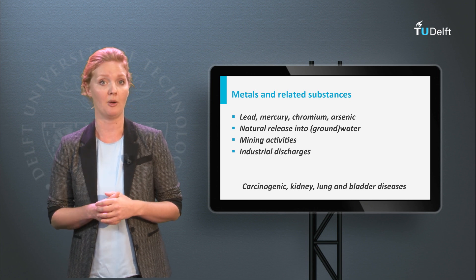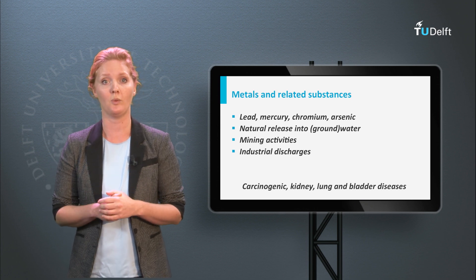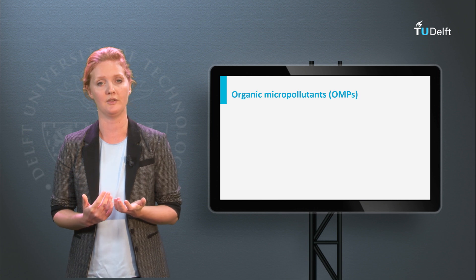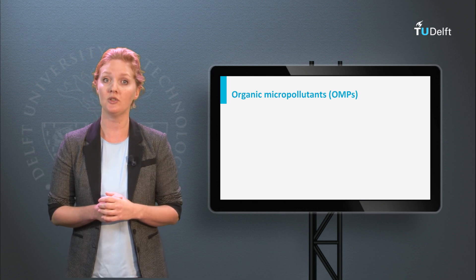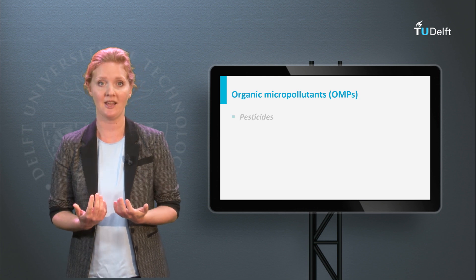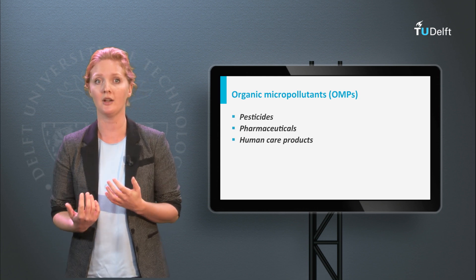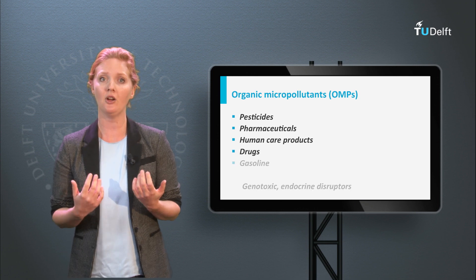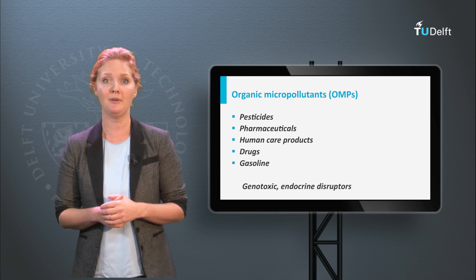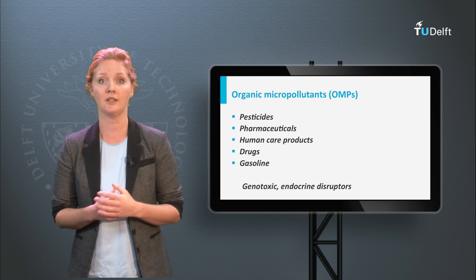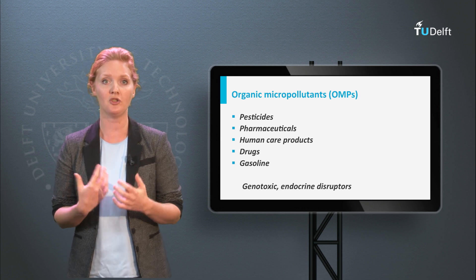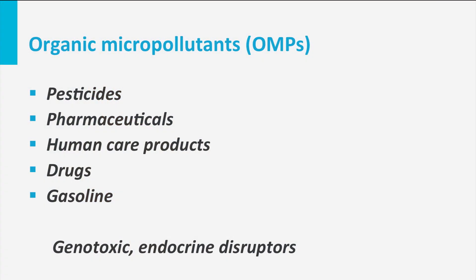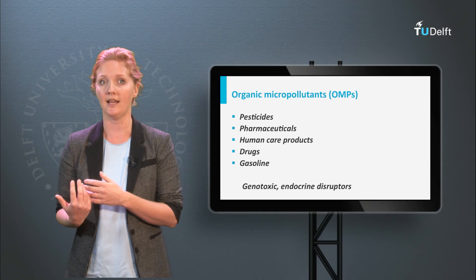Another group of chemical compounds that may be present in source water are organic micropollutants, shortly called OMPs. This group includes contaminants such as pesticides, pharmaceuticals, personal care products, drugs and gasoline. Depending on the dose, these compounds may be genotoxic and endocrine disrupting. A particular concern is the potential mixture of many different organic micropollutants — like a cocktail of substances — as it is difficult to detect and to remove.